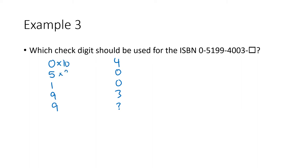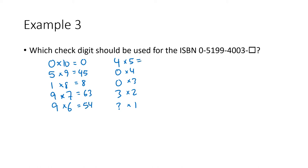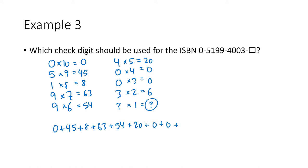Using the weight pattern 10, 9, 8, 7, 6, 5, 4, 3, 2, 1, we compute: 0, 45, 8, 63, 54, 20, 0, 0, 6, and question mark times 1 is question mark. Adding all the known values — 0 plus 45 plus 8 plus 63 plus 54 plus 20 plus 0 plus 0 plus 6 — gives 196.